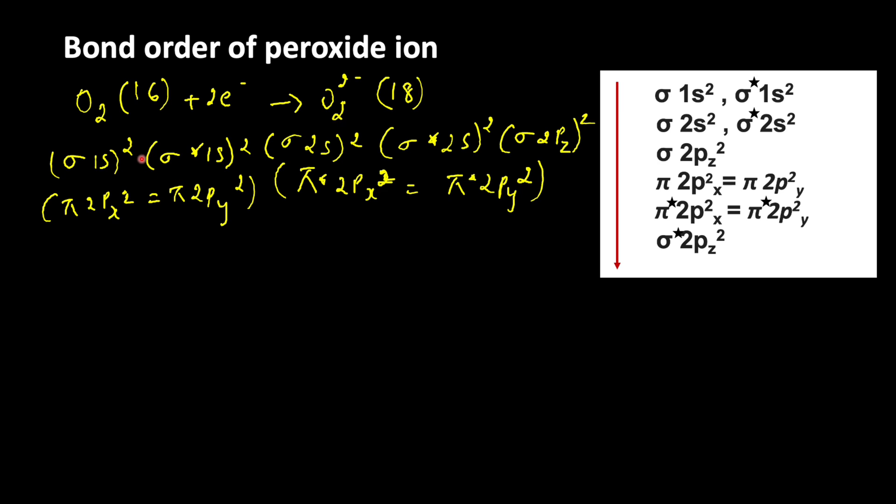Now count the electrons: 2, 4, 6, 8, 10, 12, 14, 16, 18 electrons are present. So this is the configuration of peroxide ion. Using this let us find the bond order.